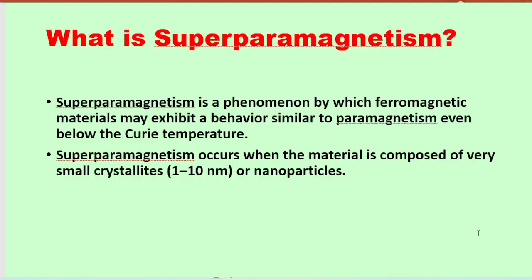What is superparamagnetism? Superparamagnetism is a phenomenon in ferromagnetic materials where they change to paramagnetic behavior below a certain size — when they transition from multi-domain to single-domain structures. In ferromagnetic materials there is a domain structure, and when we go below a certain size, perhaps less than 20 nanometers, we get single-domain particles that show paramagnetic behavior. This paramagnetic behavior in ferromagnetic materials below a certain size is known as superparamagnetism.